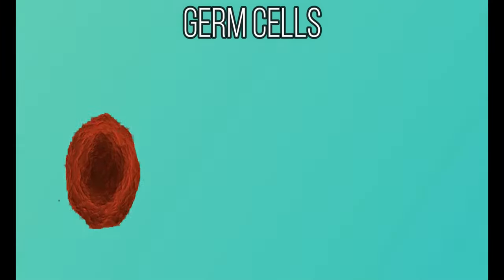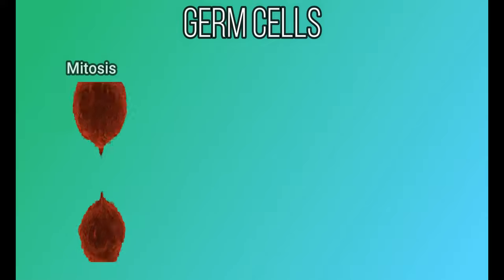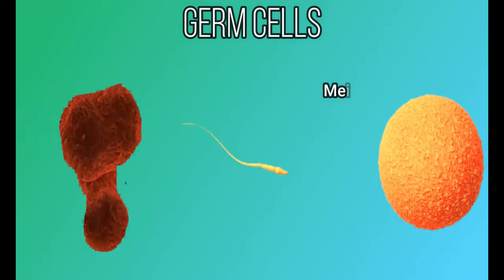The second type of cells is the germ cells, or sex cells. They undergo mitosis to multiply, or meiosis to give birth to gametes.